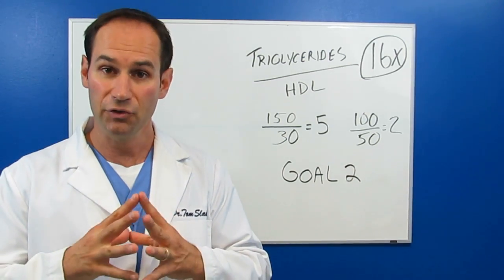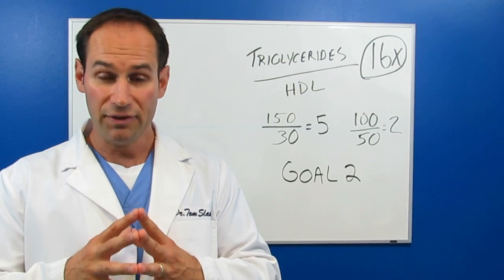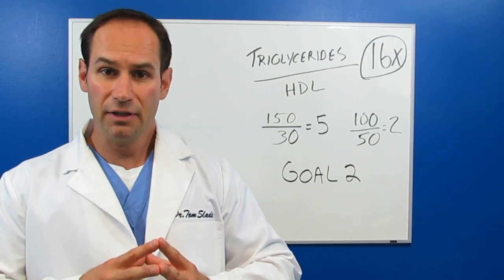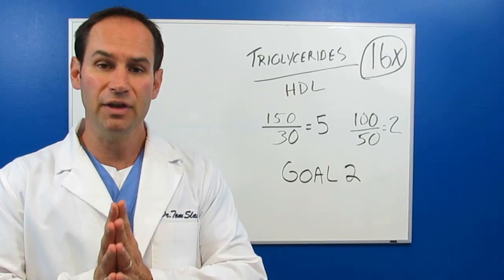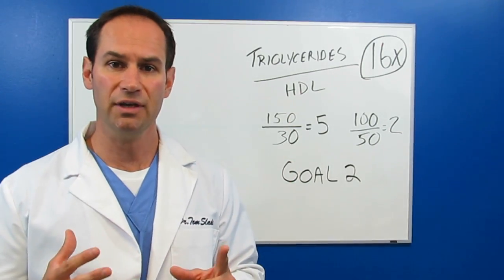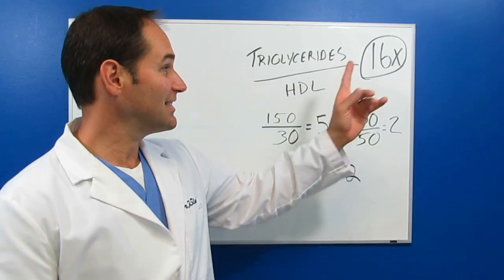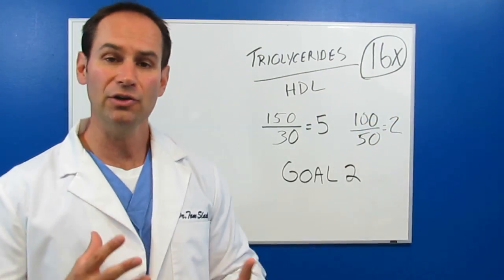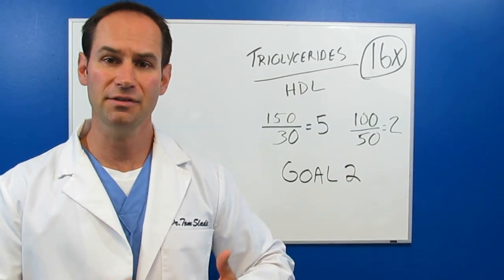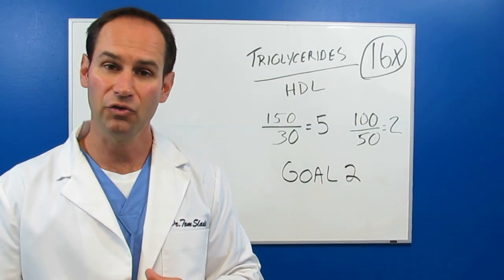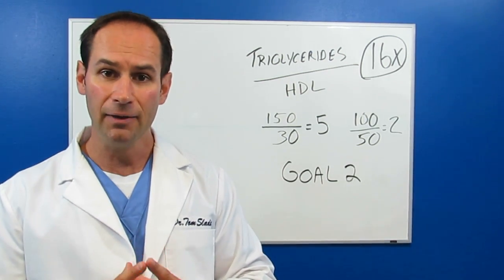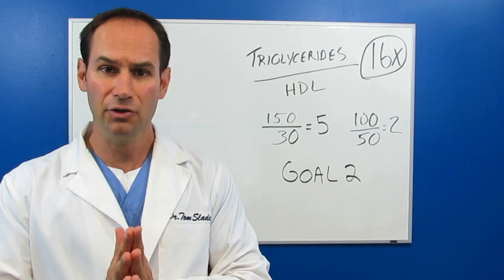Now, here's the thing. What they found, the American Heart Association did a study they published in a journal that said the people that have the highest triglyceride to HDL ratio have a 16 times greater chance of developing heart disease and complications from that. So if that number is high, you really got to pay attention and get that under control.